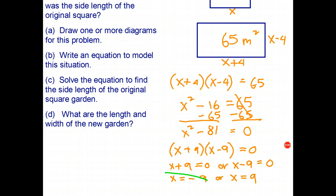Let me check this by going back to the original word problem. Originally my garden was nine by nine. So my new garden is going to be nine minus four, which is five meters, and nine plus four, which is thirteen meters.